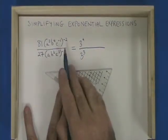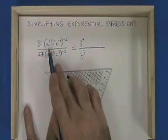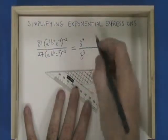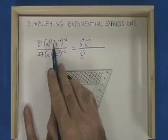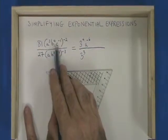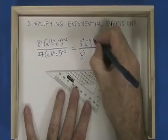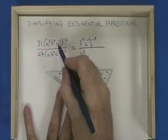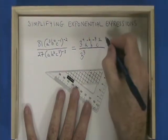Now I'm going to apply the exponent negative 2 to the contents of the bracket. a to the power of 3, to the power of negative 2, is a to the negative 6. b to the power of 4, to the power of negative 2, is b to the negative 8. c to the negative 1, to the negative 2, is c squared.